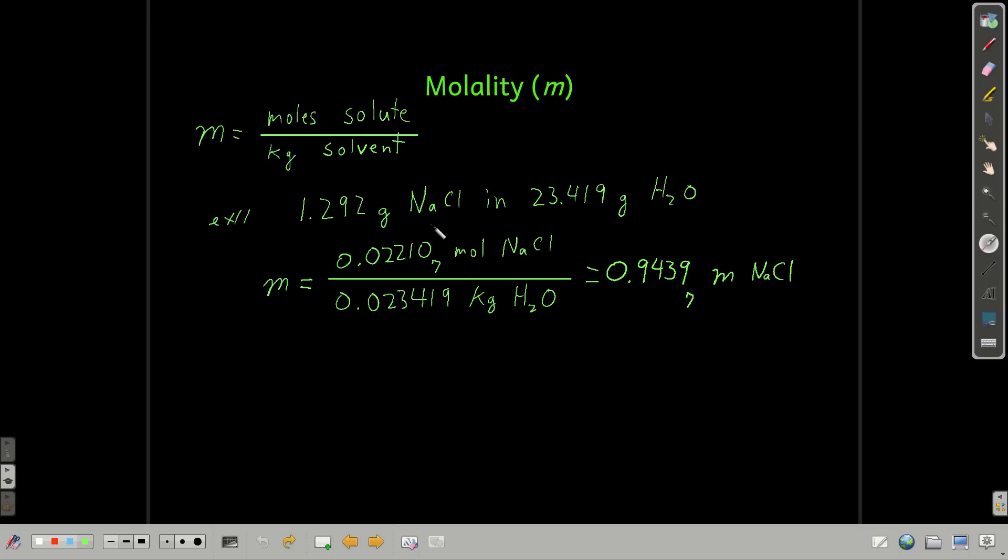So, to calculate the molality of this same solution that we've been using, it's 1.292 grams of sodium chloride and 23.419 grams of water. All we need is the moles of the solute, which is still sodium chloride. And we already calculated that. Remember back when we did the mole fraction. We calculated this. So that goes there. And remember, to go from grams to kilograms, I move the decimal three places to the left. I get 0.023419 kilograms. Sig figs, we have four sig figs. Do the division. And that's going to round because seven is five or bigger. We round this up, which makes this a four. 0.9440 molal in sodium chloride.